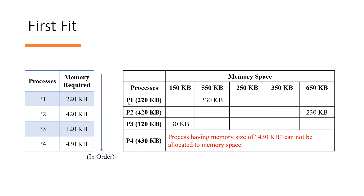For first-fit, the strategy says that whatever the first memory space is that is free and large enough for the process, we allocate it there. If the available space is greater than or equal to the required memory, you can allocate it. For example, 150KB is available and P1 requires only 20KB, so we can assign P1 to the 150KB partition.